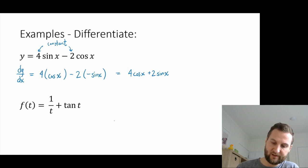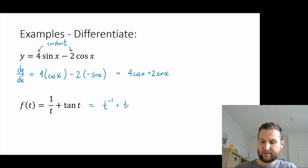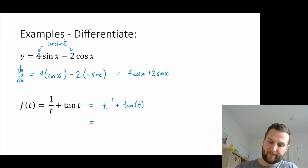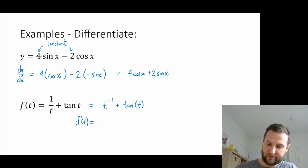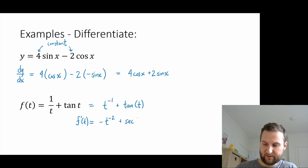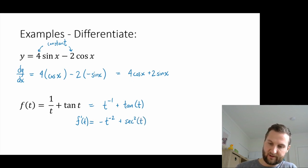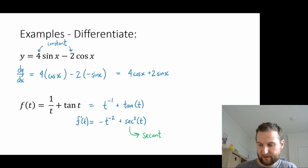For a tangent example, rewrite 1/t as t to the minus 1, plus tangent of t. The derivative f prime of t: using the power rule on t to the minus 1 gives minus t to the minus 2. Then tangent differentiates to a new trig function called secant squared — written sec squared of t. So f prime of t equals minus t to the minus 2 plus sec squared of t.